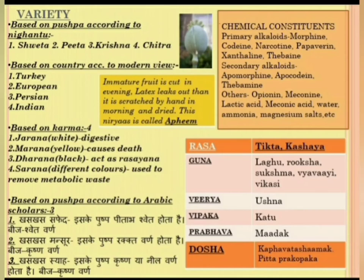According to Arabic scholars, based on pushpa (flower), it is of three types: Khashqash Safed, Khashqash Mansoor, and Khashqash Siam. The white variety (Khashqash Safed) has white flowers with black seeds. Afeem is collected by making incisions on the raw fruit in the evening, and the latex that oozes out is collected the next morning by hand-scraping, then dried and dehydrated — this niryasa is called Afeem. Primary alkaloids include Morphine, Codeine, Narcotine, Papaverine, Xantheline, and Thebaine. Secondary alkaloids include Apomorphine, Apocodine, and Thebamine. Other compounds include Opionine, Meconic acid, Lactic acid, Water, Ammonia, and Magnesium salt.